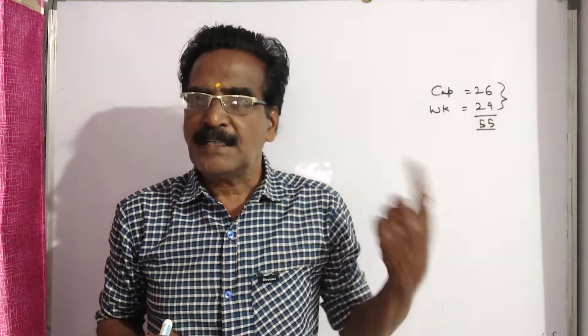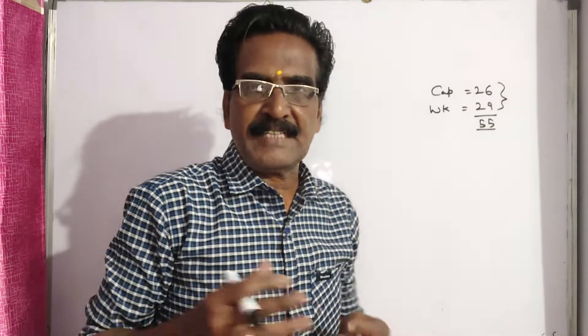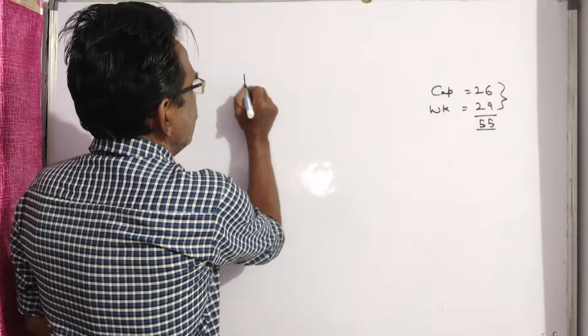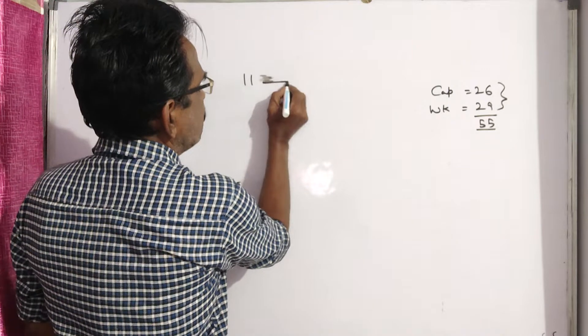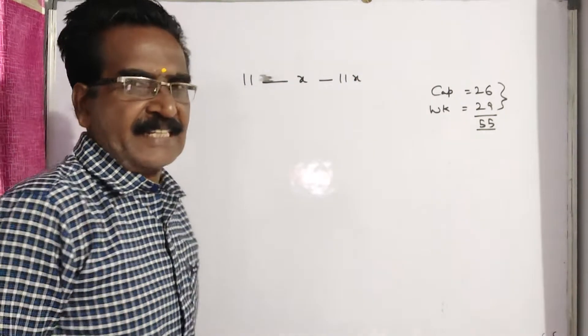So, what is the average age of all the 11 members of the cricket team? See, the average age of 11 members of a team, say X, then the total is 11X.